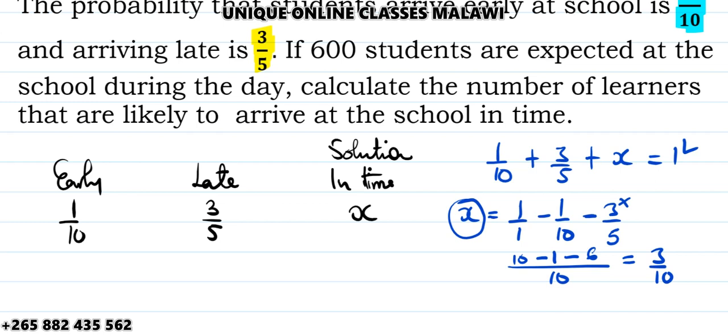To find the number of students who are going to arrive on time, we multiply the total number of students by the probability. So 3 over 10 times 600. 10 into 600 is 60, times 3 is 180 students. So 180 are the students who are going to arrive on time.